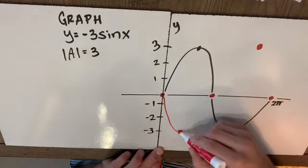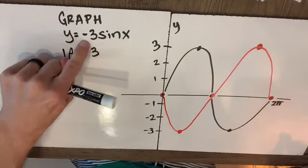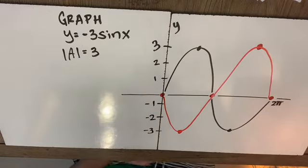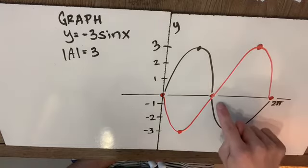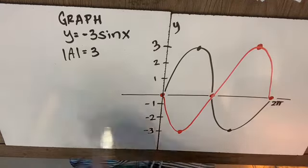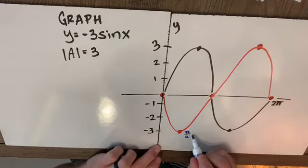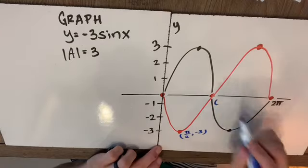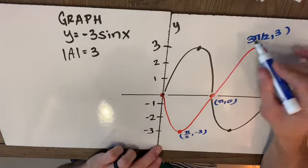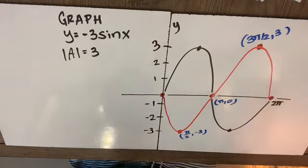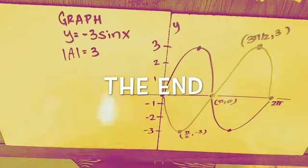And my graph goes whoop whoop whoop. Notice with a negative out front, I have reflected over the horizontal axis. And my five point pattern now goes 0 min 0 max 0. I certainly could find all these points here. This is going to be π/2 comma negative 3. And here is π comma 0. And here we have 3π/2 comma 3 in addition to 0, 0 and 2π, 0. So not at all hard for me to find the five points. My red graph is my final graph for negative 3 sign x.